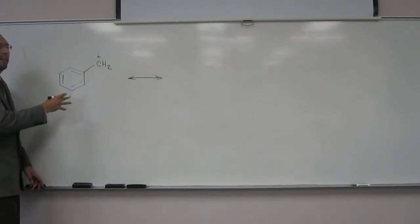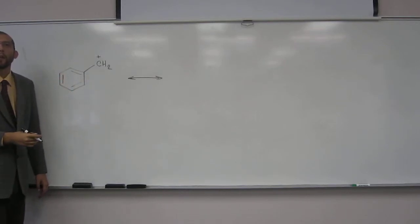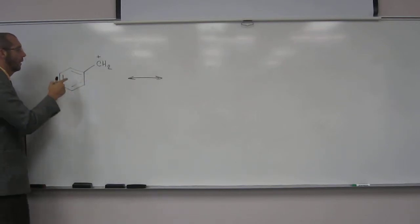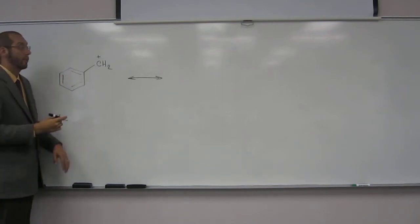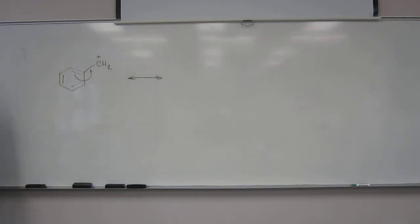Do we have any electrons that can move around in this thing for a resonance structure? Which ones are they? The pi-bond electrons. So we have some here. To do one resonance structure, let's just do one. Like that.